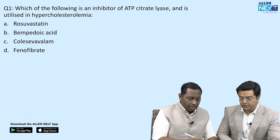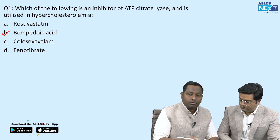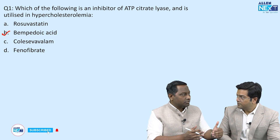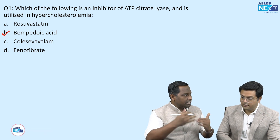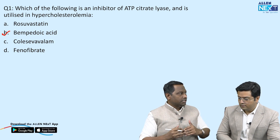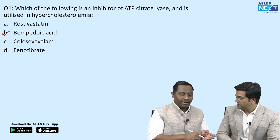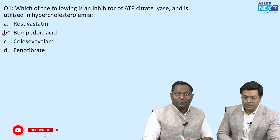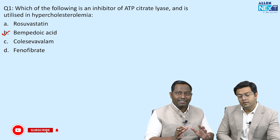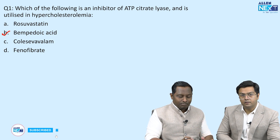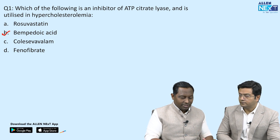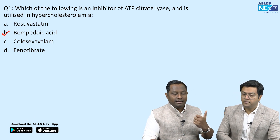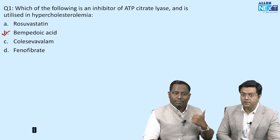If there is a patient who is on a statin and non-responsive even at the highest dose, the next best choice in that clinical scenario is bempedoic acid. So bempedoic acid is the correct answer. The mnemonic: A for ATP citrate, B for bempedoic acid.